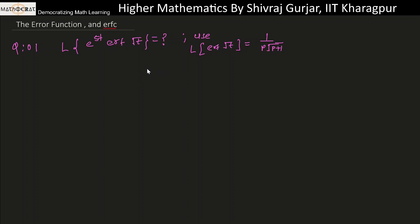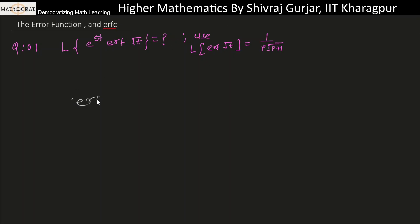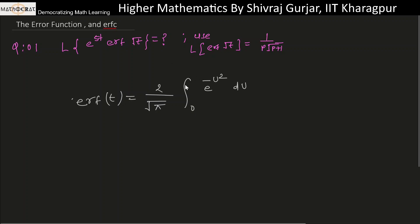In this lecture we'll see some special functions. First is the error function. The error function is denoted by erf(t) and is defined as two by root pi times the integral from zero to t of e to the power minus u squared du. This is the error function.